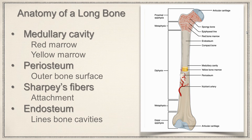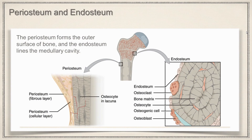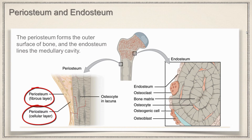The periosteum is on the outside. If we look at the inside cavities, we're going to find the endosteum, lining the medullary cavity and also lining the holes and canals that blood vessels run through. The periosteum forms the outer surface of the bone and the endosteum lines the medullary cavity. You can see that the periosteum is divided into a couple of layers: a fibrous layer on the outside and a cellular layer just below that. The Sharpey's fibers shown in red hold it in place.